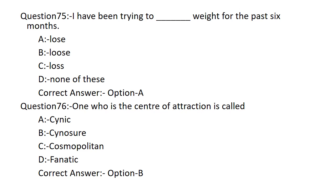One who is the center of attraction is called: Option A: CYNIC. Option B: CYNOSURE. Option C: COSMOPOLITAN. Option D: FANATIC. Option B is the correct answer — CYNOSURE. One who is the center of attraction is called a CYNOSURE.